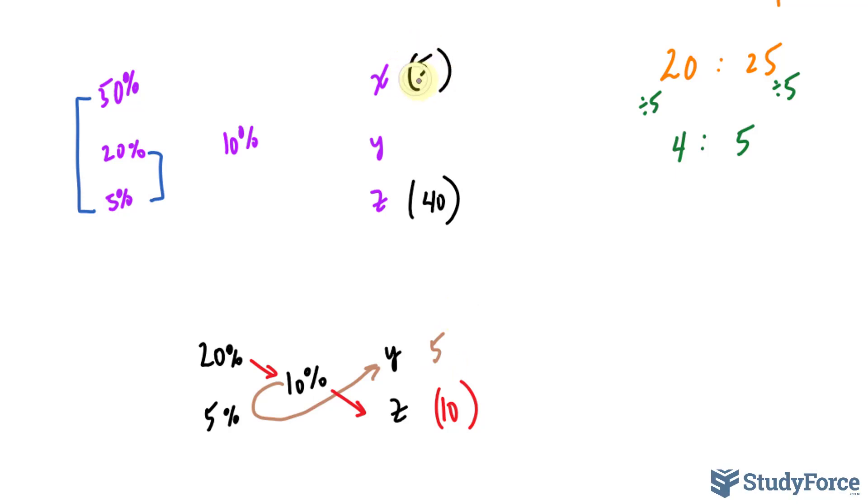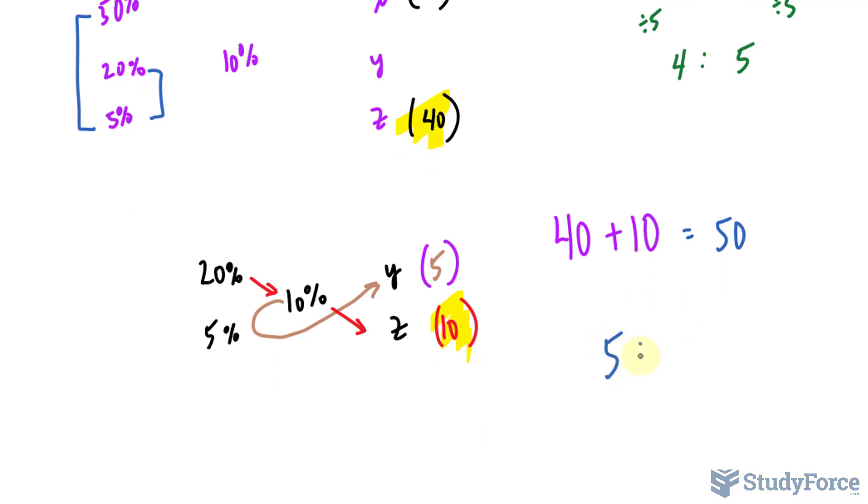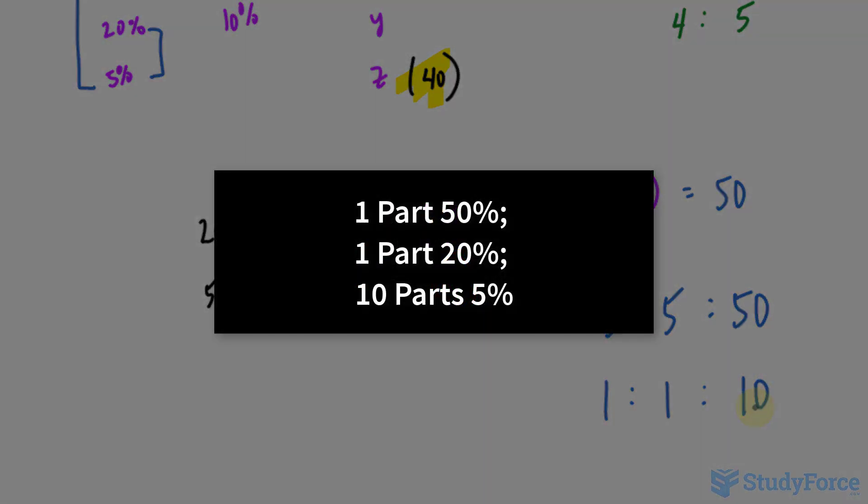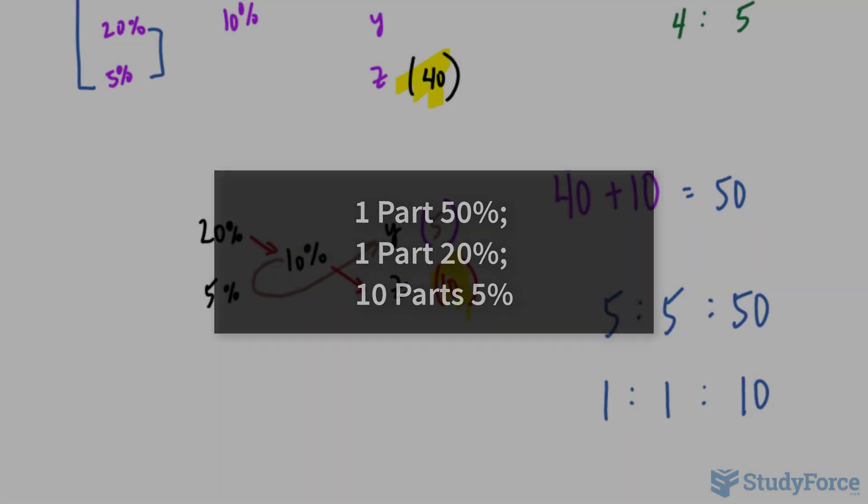So we need 5 parts of the 50%, we need 5 parts of the 20%, and we need 40 plus 10, these two values that I'm highlighting, of the 5%, which makes 50. Writing this down as a ratio, it's 5 to 5 to 50, and reducing this ratio down by dividing each of these terms by 5, we get 1 to 1 to 10. So 1 part 50, 1 part 20, and 10 parts 5%. That's the answer to question number 3.